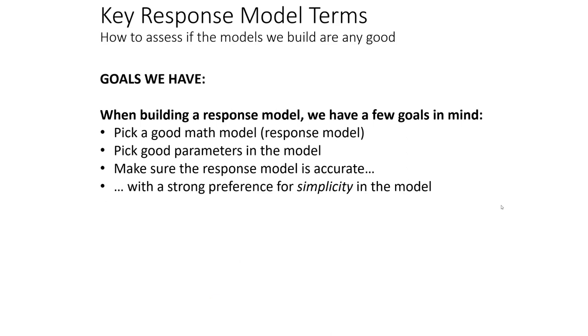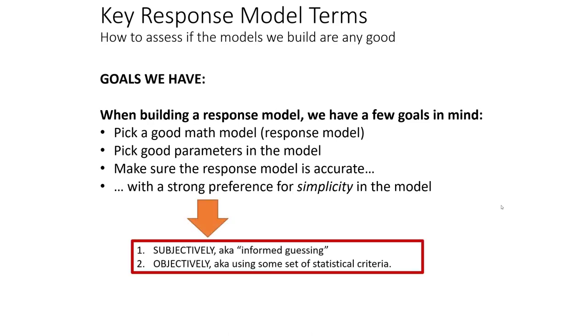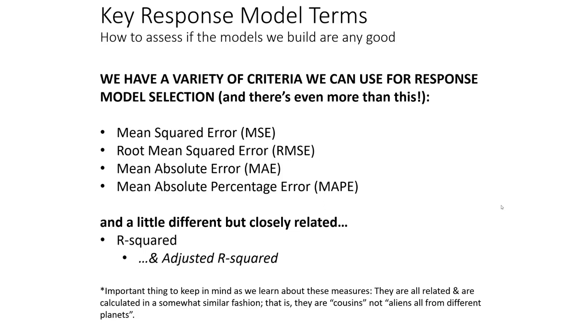We are going to try to pick a good math model and pick good parameters for the model and make sure it's accurate and relatively simple. There are three different loss functions: mean squared error, root mean squared error, and mean absolute error that are typically used to establish how the model is performing. I also note there's mean absolute percentage error or MAPE, but it is objectively wrong to use MAPE. Do not use this.